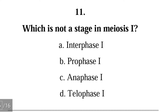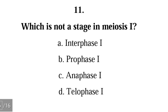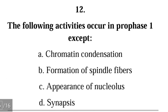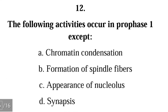Question 11: Which is not a stage in meiosis 1 — interphase 1, prophase 1, anaphase 1, telophase 1? The correct answer is A, interphase 1; it is not a stage under meiosis. Question 12: The following activities occur in prophase 1 EXCEPT — chromatin condensation, formation of spindle fibers, appearance of nucleolus, synapsis. The correct answer is C; the nucleolus does not appear in prophase 1, instead it disappears.